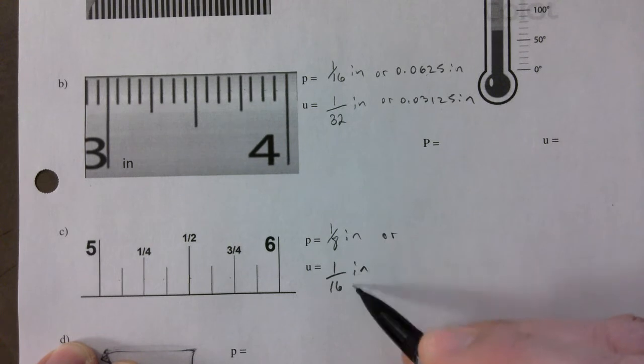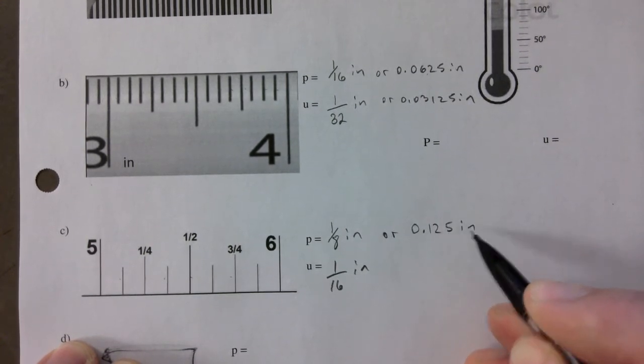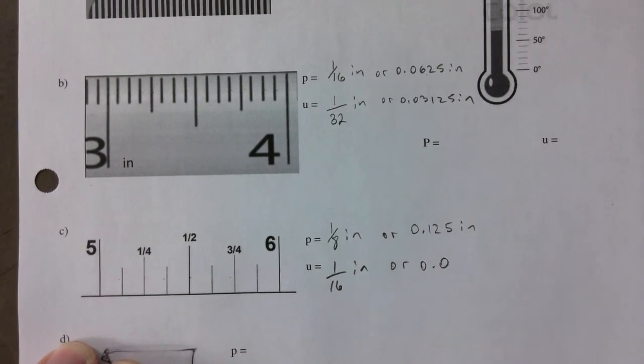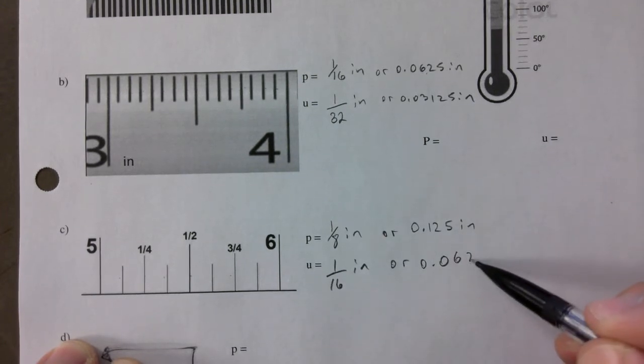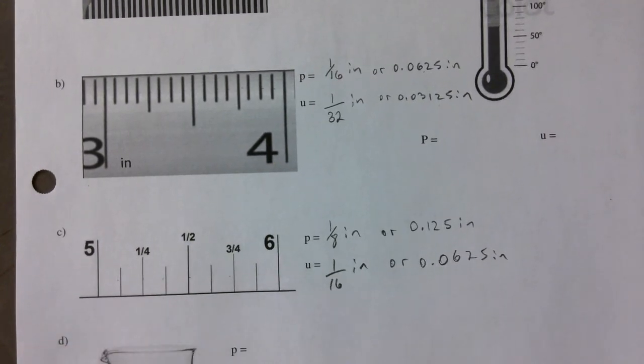That's 0.125 as a decimal or 0.0625. So one mark for a, one mark for b, one mark for c, and so on.